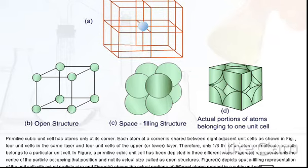In figure, a primitive cubic unit cell has been depicted in three different ways. Figure a represents only the center of the particle occupying that position and not its actual size, called as open structures. Figure b depicts space-filling representation of the unit cell with actual particle size, and figure c shows the actual portions of different atoms present in a cubic unit cell.